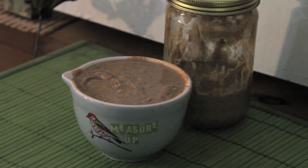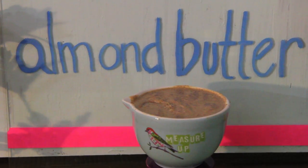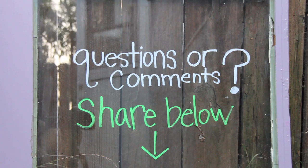This should store in the fridge for 7 to 10 days, and that's it, you have successfully made homemade almond butter. Thanks for watching and enjoy!